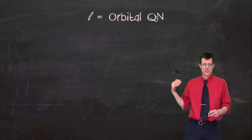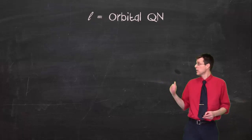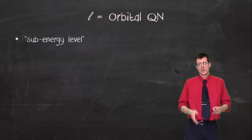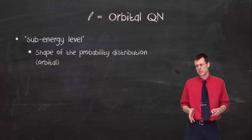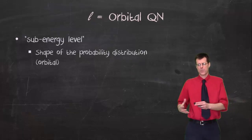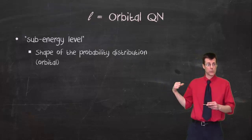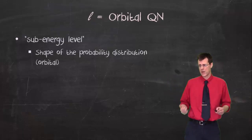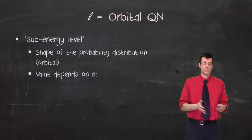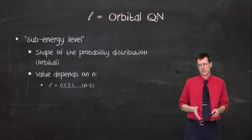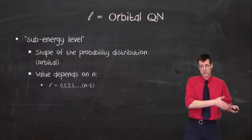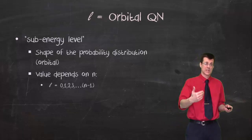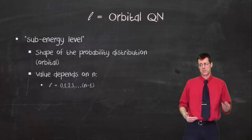This is where things get a little bit different with L, the orbital number. Now, I use a script L just so that it doesn't look like a one or something else, but it's an L. We call it the sub-energy level. And with the sub-energy level, that's going to describe the shape of the probability distribution. So you remember the S, P, D, and F orbitals, those different shapes? Those would be determined by these values of L. And the values of L depend on the value of N. So L starts at 0 and works its way up to as high as N minus 1. So in other words, if N is equal to 3, L could be 0, 1, or 2.